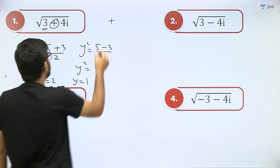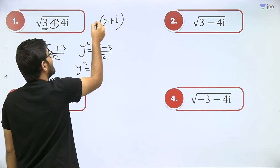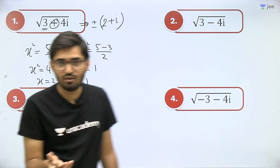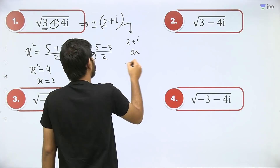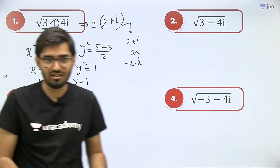Whatever sign is in between the complex number, that same sign appears here. So the answer is 2 + 1·i. And we put ±, so this is your answer. Because whenever you are finding the square root of a complex number, you always get 2 answers. One answer is 2 + i, and the other answer is −2 − i.